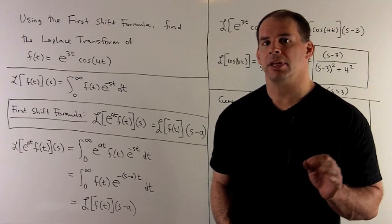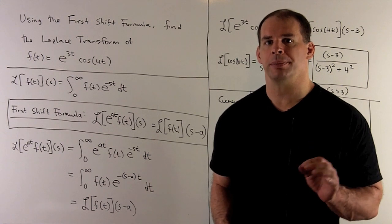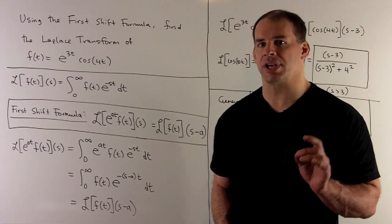Using the first shift formula, we find the Laplace transform of the function f(t) equals e^(3t) cosine(4t).